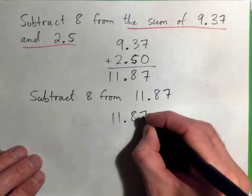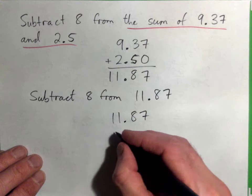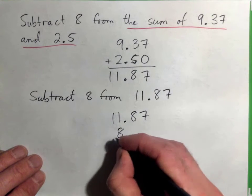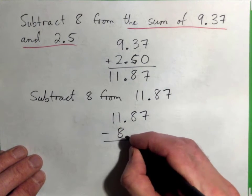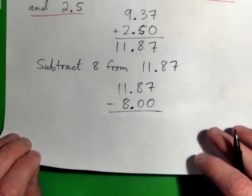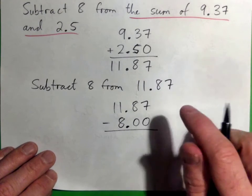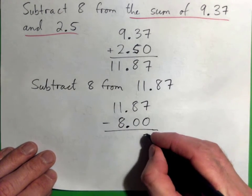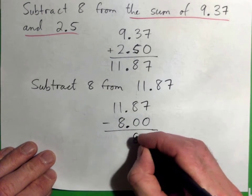...that I can line up my decimals and do it right. 7 minus 0 is 7, 8 minus 0 is 8, 11 minus 8...